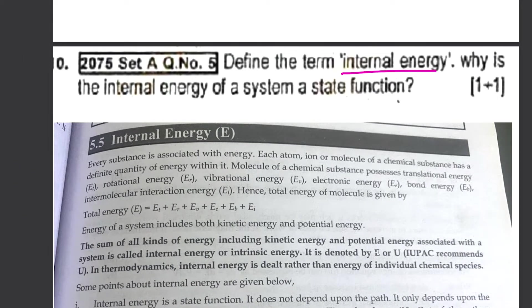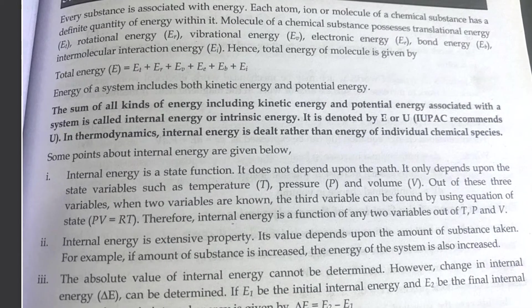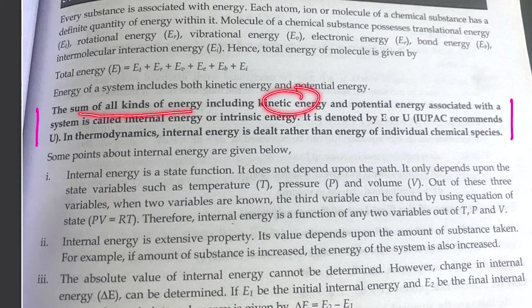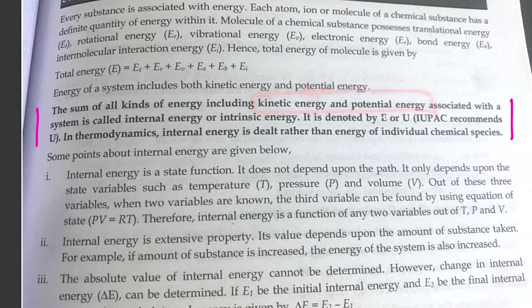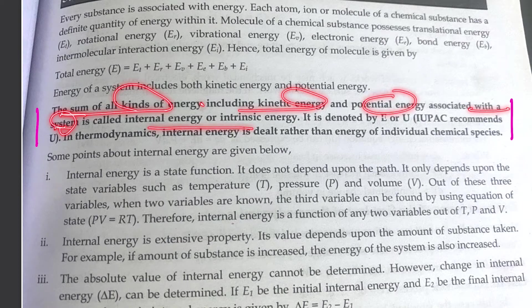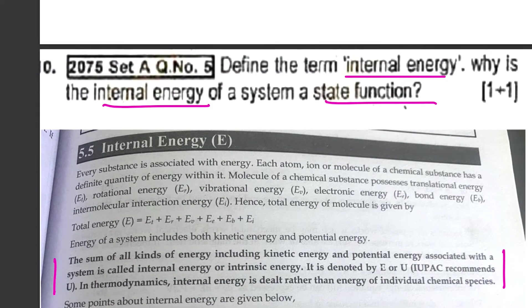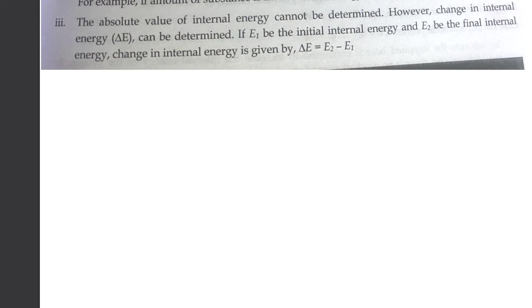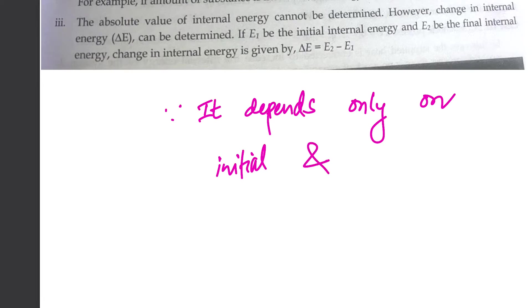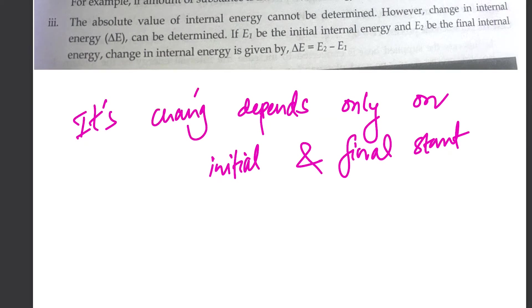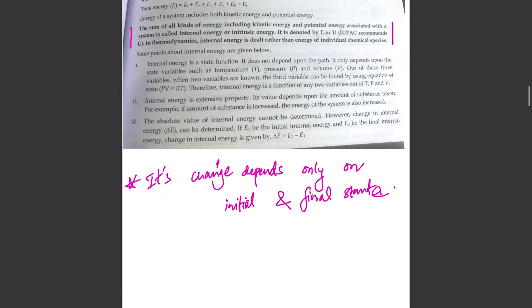And then we have internal energy. What is the state function? The internal energy is defined as the sum of all kinds of energy, including kinetic and potential energy — gravitational and nuclear forces — associated with the system. It is internal and intrinsic. It depends only on the initial and final state. Because the change in internal energy depends on the initial and final state, it is a state function.